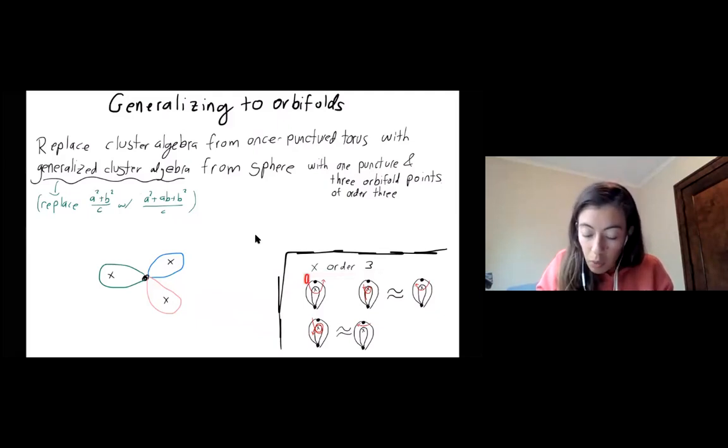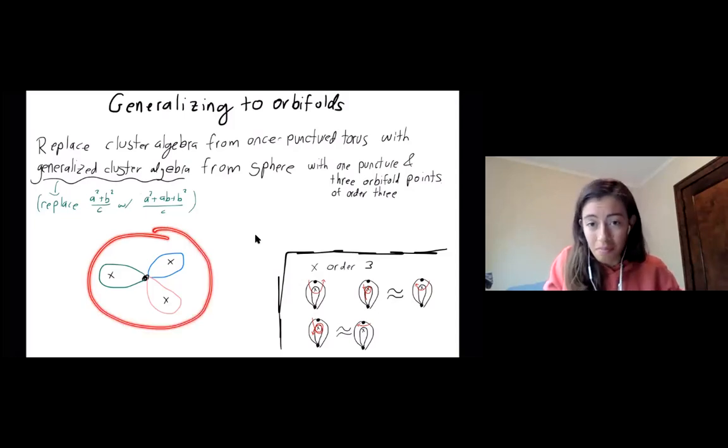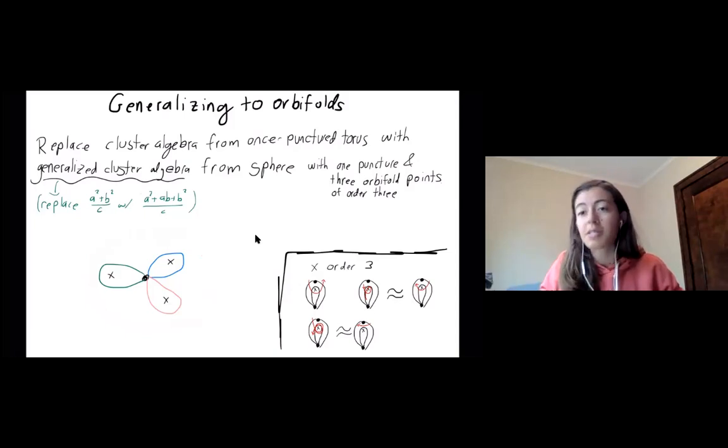So our orbifold points are order three, which means you can wind once around them. You can wind twice. So that's also the same as winding once the other direction. And if you wind three times around them, that's like not winding at all. So it's like a mod, just mod three action with winding numbers. I guess the only thing I really want people to take away here is, so here's what a triangulation of a sphere with one puncture and three orbifold points looks like. So again, we have three arcs. They all sort of have the symmetric relationship. So in that way, it's all like the torus. It's just that we have orbifold points instead of just a normal surface.